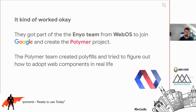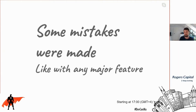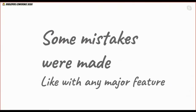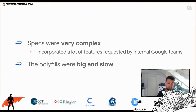The Polymer team's idea was to create polyfills so you could play around with these features without them being in the browser, and get feedback to feed back into the standards. But like any major feature, mistakes were made. The specs became very, very complex — the team went around asking all different kinds of teams inside Google what they needed, and if you ask developers what they want, they want everything. So the specs became extremely complex, making them difficult to polyfill, and the polyfills became very big and very slow.